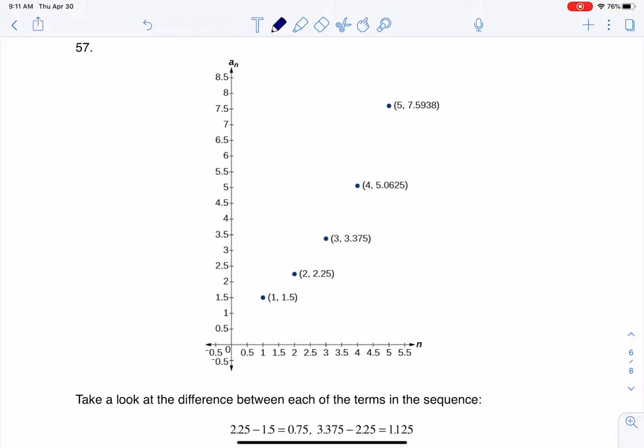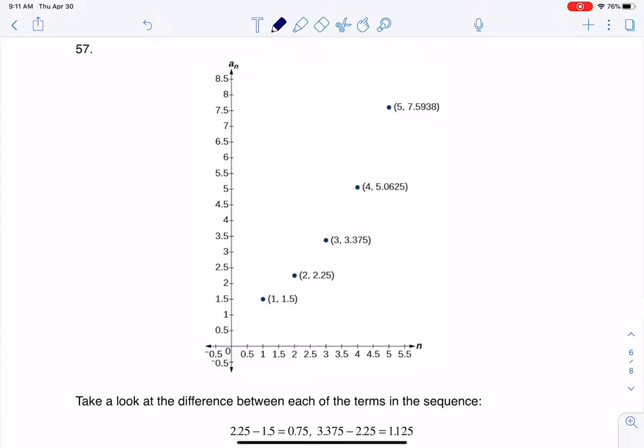Can you determine if it represents an arithmetic sequence? So if I look at the sequence being built based on this graph, they're telling me a sub 1 is 1.5, a sub 2 is 2.25, a sub 3 is 3.375, and then you can start to see how this is playing out.